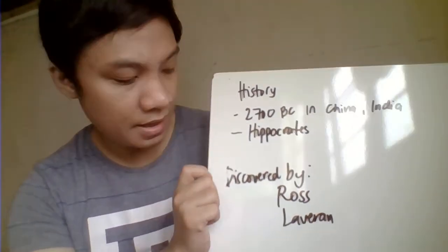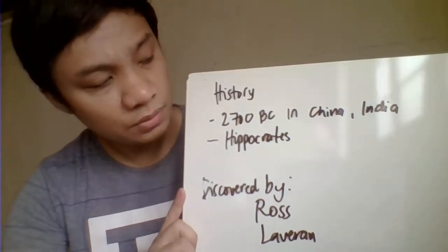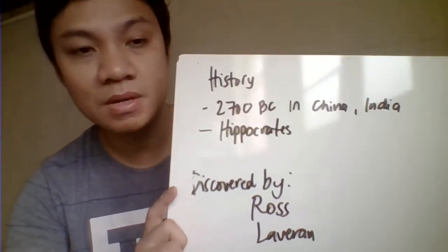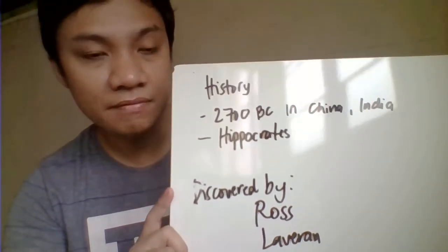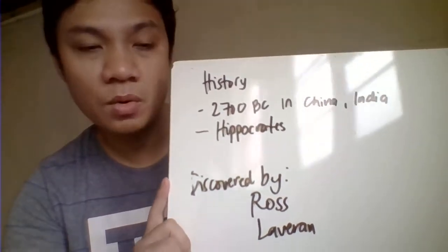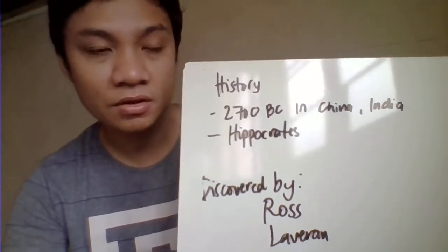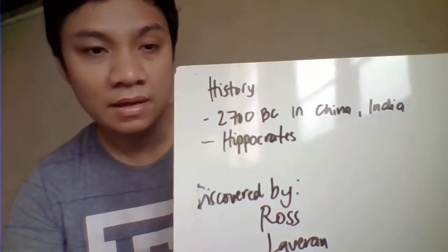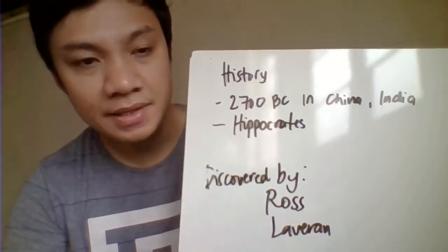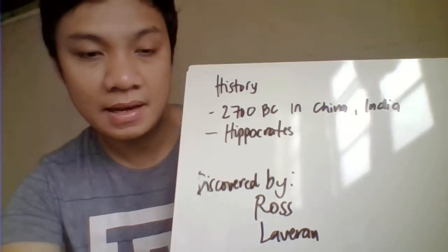For the history of Malaria, it started as early as 2,700 BC in China and India, where this infection had already been identified. It was then Hippocrates who gave the first clinical description about this parasitic infection, and it was later discovered by Ross and Laveran.